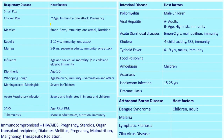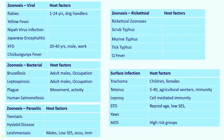For host factors, as mentioned earlier, age, immunity, and nutrition are the common factors. When it comes to immunity, you can write about vaccine status, previous infection, and immunocompromised states — such as HIV/AIDS, pregnancy, steroids, organ transplant recipients, diabetes mellitus, malnutrition, malignancy, and therapeutic radiation.